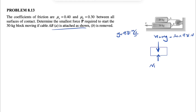Force P is applied on the 30 kilogram block, moving it to the left, so the bottom one goes to the left. Because the cable is attached to the 20 kilogram block, that block moves to the right, so friction must act in the opposite direction. We'll call it F1.